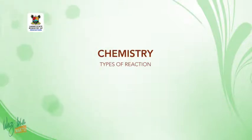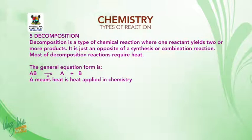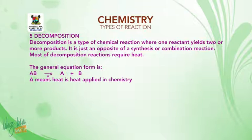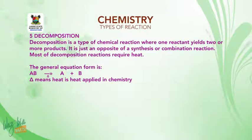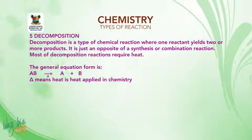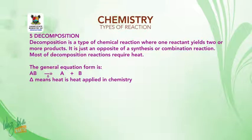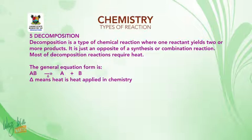Decomposition reaction. Decomposition is a type of chemical reaction where one reactant gives two or more products. It is the opposite of a synthesis or combination reaction. Most decomposition reactions require heat. The general form is: AB → A + B (with delta/heat applied). The delta symbol means heat is applied in chemistry.